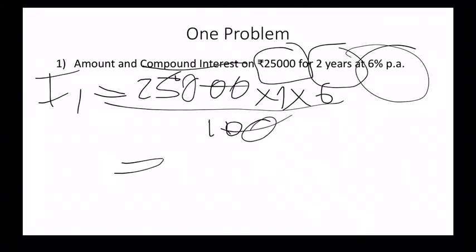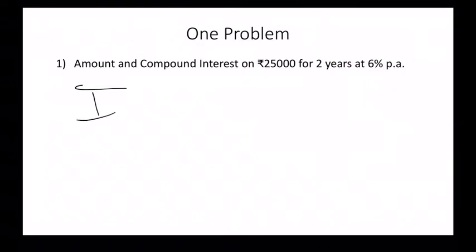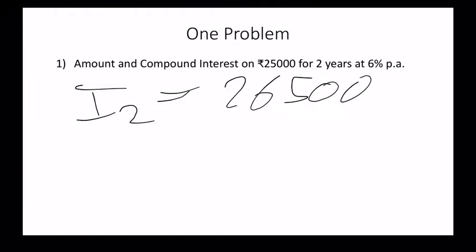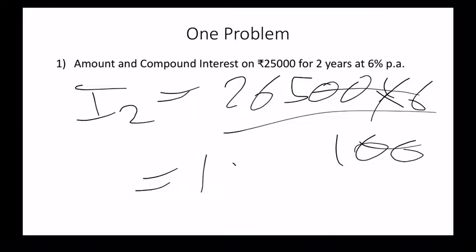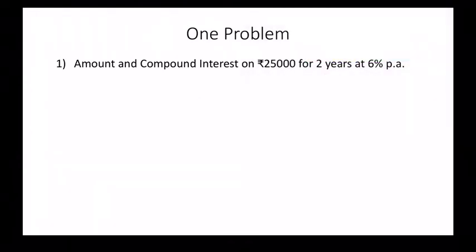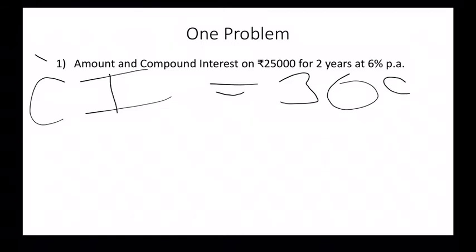Interest at the ending of the second year would equal the amount at the end of the first year, which is 26,500 (P plus I), multiplied by 6 divided by 100, which gives us 1,590 rupees as the interest for the second year. If we sum up the interest from the first year and second year, we get the compound interest, which equals 3,090 rupees. If we want the amount, it would be 28,090 rupees.